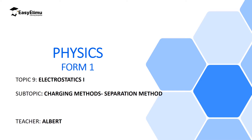Welcome to ECLIMU Learning Simplified and welcome to this lesson. In the previous lesson we discussed how to charge materials using the contact method. In contact method, if you wanted a material positively charged then you use a positively charged rod, and if you want a material negatively charged then you use a negatively charged rod.